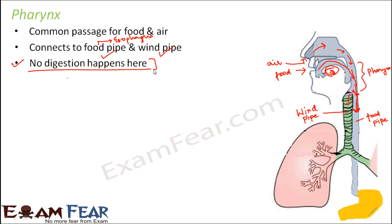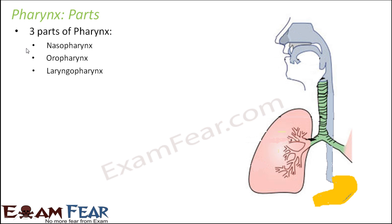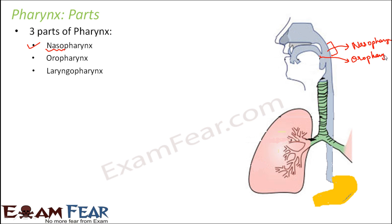Now let us look at the structure of the pharynx. There are three parts: nasopharynx, oropharynx, and laryngopharynx. The nasopharynx is the portion of the pharynx directly linked to the nasal cavity. The oropharynx is the portion linked with the oral cavity. And the laryngopharynx is the lower portion of the pharynx linked with the larynx, which is the voice box or throat.